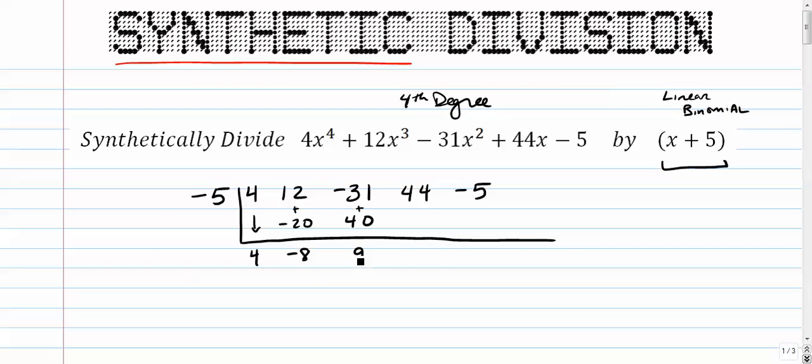Multiply negative 5 times 9, you get negative 45. Add those, you get negative 1. Take negative 5 times negative 1, you get positive 5. Add them, and your remainder, your remainder is 0.